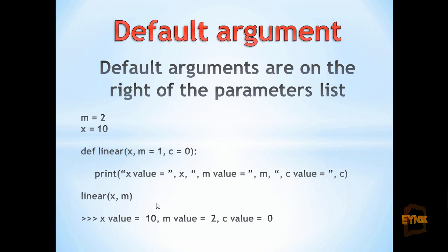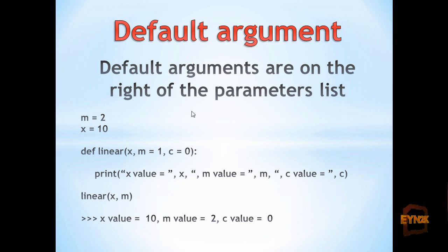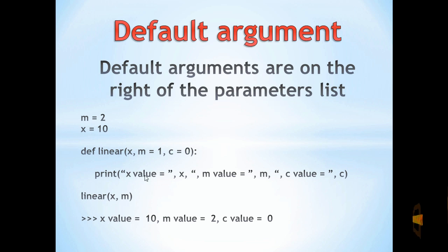Since we have passed a parameter to m, it does not receive its default value of one, so m will print out two. If no m value was passed to the function linear, m would print out one in this case.